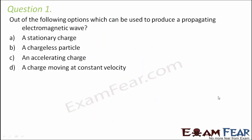First question: Out of the following options, which can be used to produce a propagating electromagnetic wave? First of all, we think about what we need for an electromagnetic wave — we need an electric field and a magnetic field, and both must be perpendicular and changing. Now let's look at the options. First option is a stationary charge — if the charge is stationary, there will be an electric field but no magnetic field.